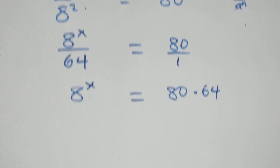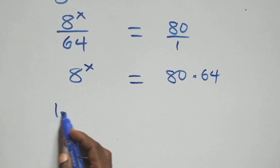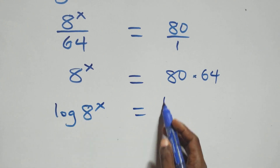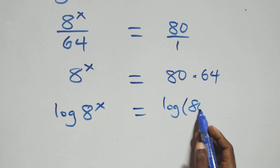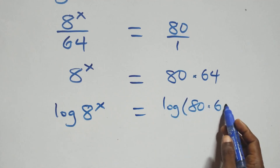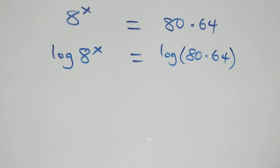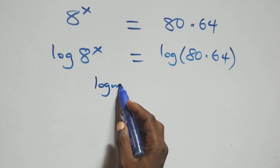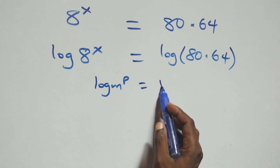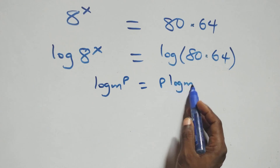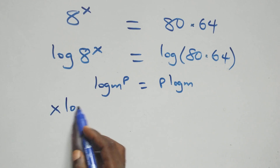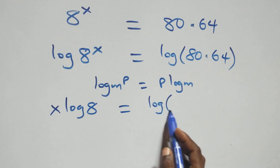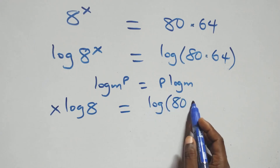The next step, we take the log on both sides. We have log of 8 raised to power x equals log of 80 times 64. At the next step, we apply the power rule of logarithm, where log of m raised to power p is the same thing as p times log m. So we have x times log 8 equals log of 80 times 64.